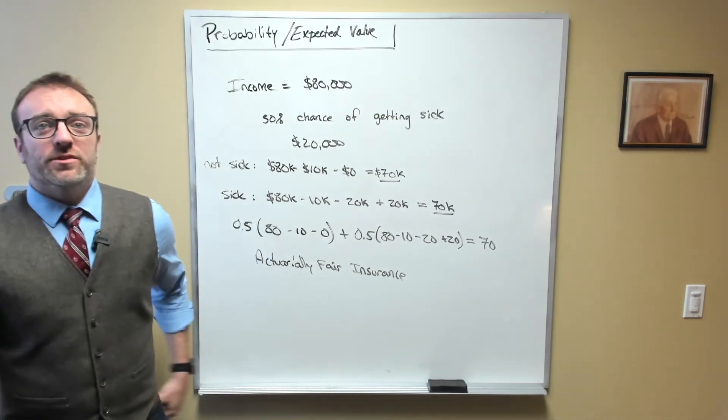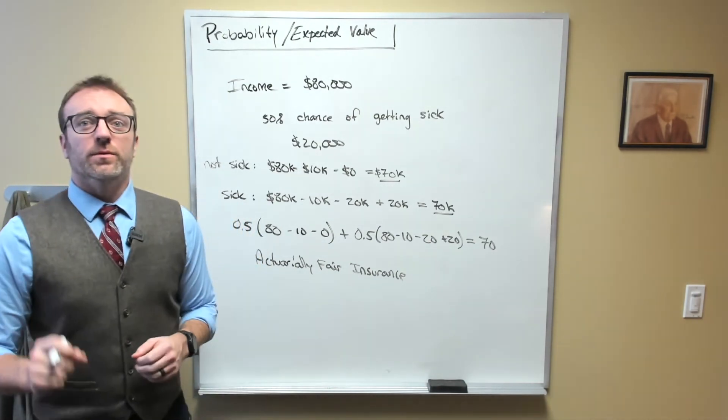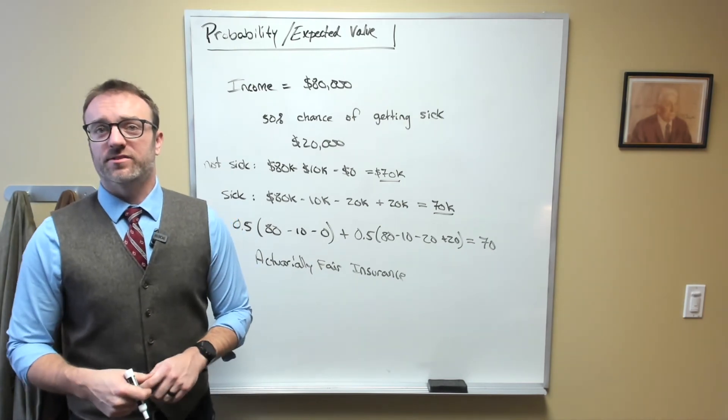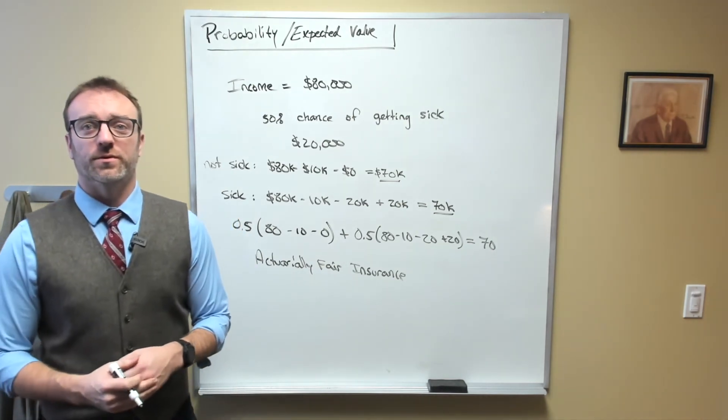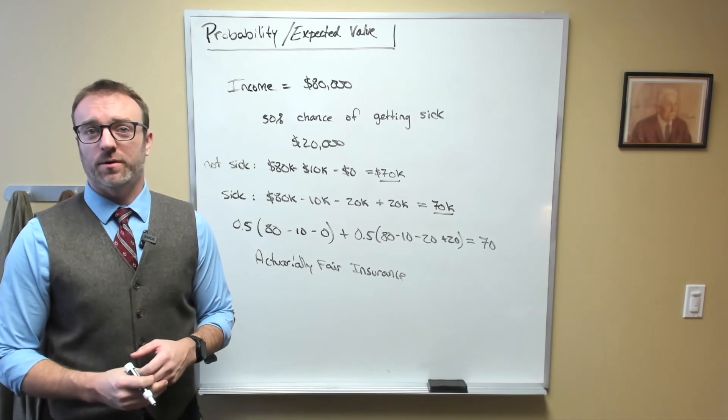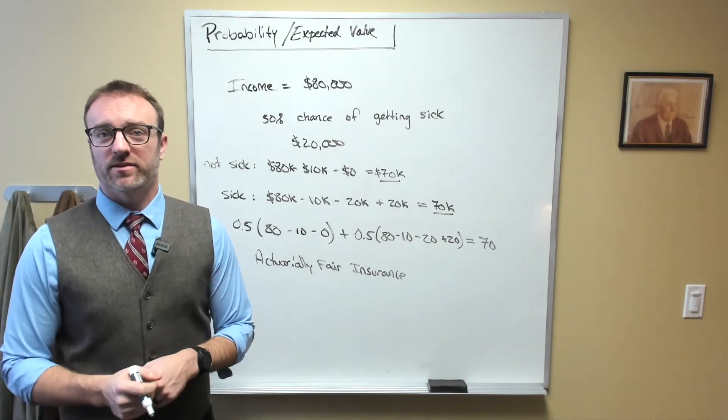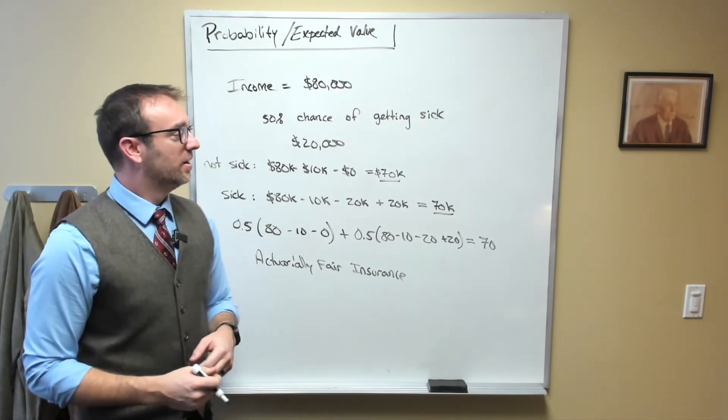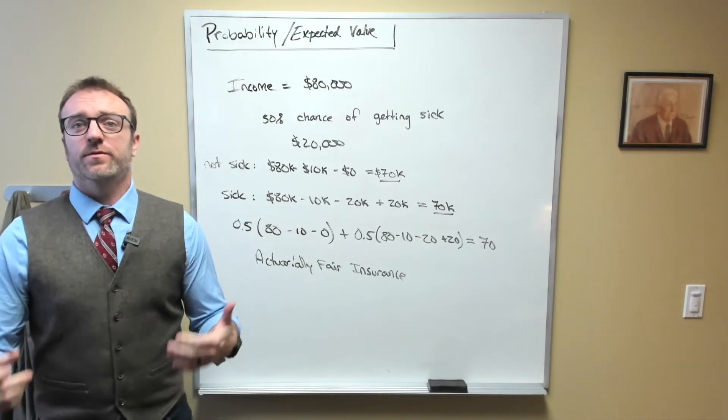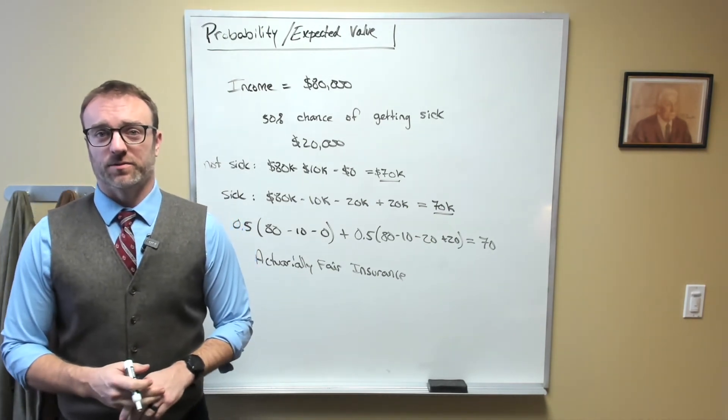What you should notice immediately is that you, the person who may or may not get sick, are no better off with the insurance policy than you were without it in terms of your expected income net of expenses. In both situations, you have an average annual income of $70,000.